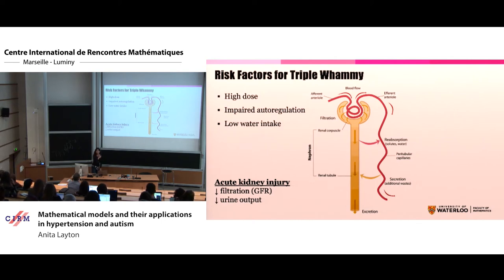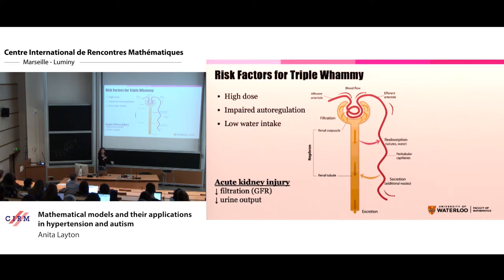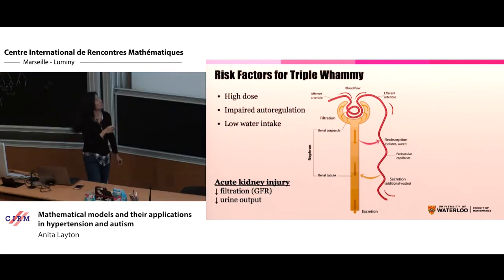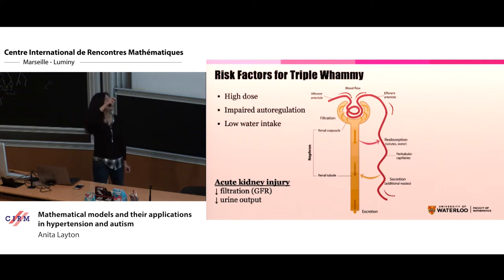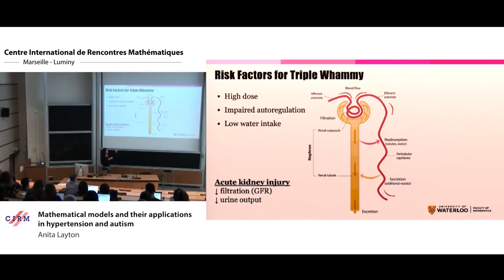The second factor is more interesting to me — it's called impaired auto-regulation. What is auto-regulation? The kidney tries to save itself. If it senses that you are not giving it enough fluid to work with, it will do what it takes to increase the filtration rate back to normal — that is called auto-regulation. If it senses there's not enough blood, it will send a signal to the blood vessel that is bringing blood to it to have it relax and dilate, reducing the resistance and encouraging more blood to come this way, hopefully increasing the filtration rate.